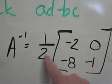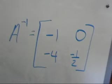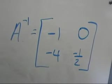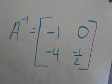Last thing you do now is scale each of the four elements, and you'll have A inverse. Therefore, A inverse is negative 1, 0, negative 4, negative 1 half.